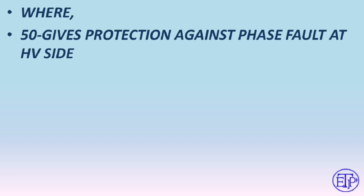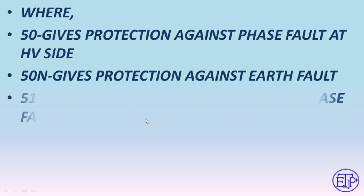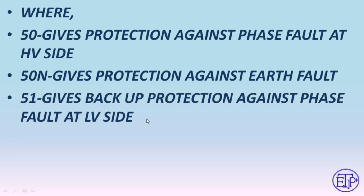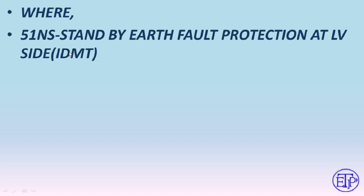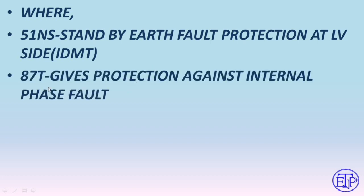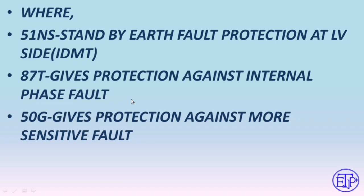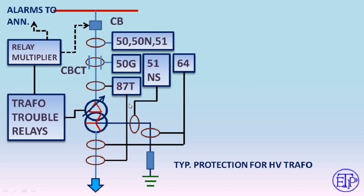Relay 50N gives protection against earth fault. Relay 51 acts as backup protection against phase fault at the LV side. Relay 64 is restricted earth fault protection — the primary earth fault protection for the LV side and it is a fast-actuating device. Relay 51NS is an inverse time standby earth fault relay acting as backup for the restricted earth fault protection 64. Relay 87T gives protection against internal phase faults via differential protection. Relay 50G gives protection against more sensitive earth faults.